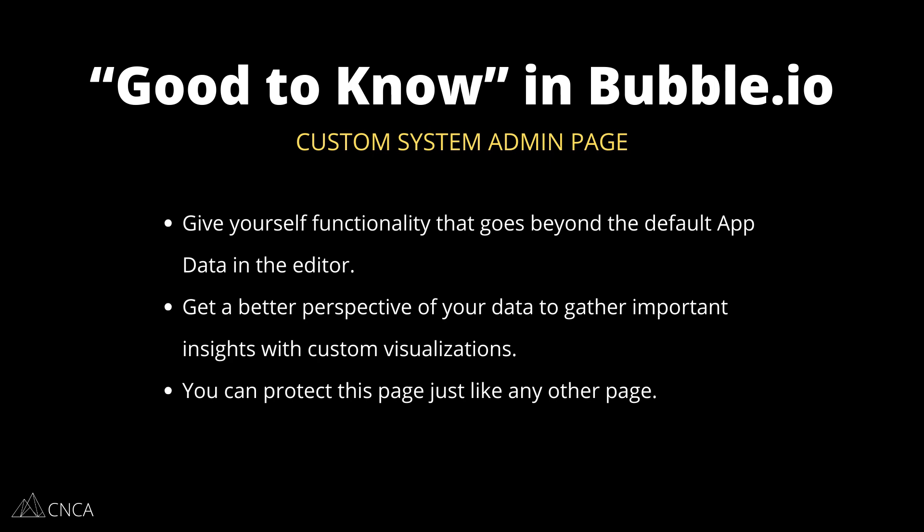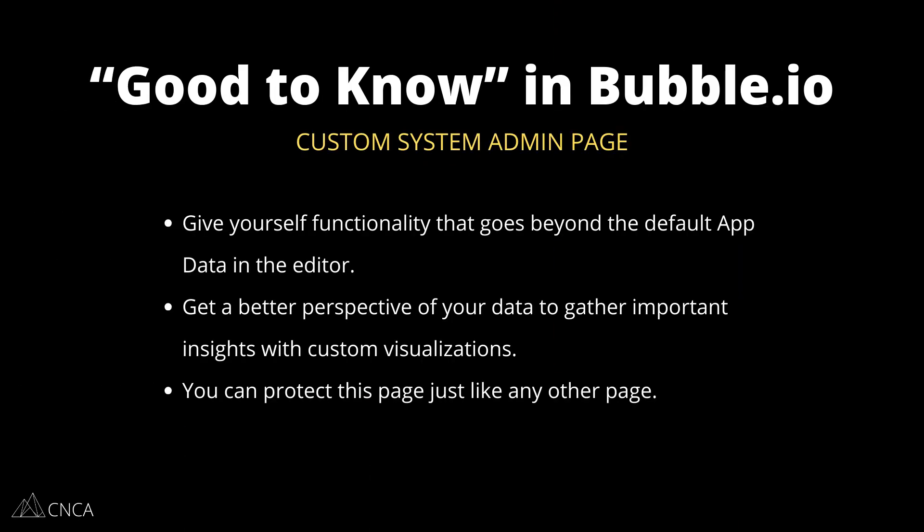This is a dedicated area where you design the interface to work for you, and of course you can protect this page so that only you can access it. Yes, you can go into your Bubble editor and do most of this functionality through app data and managing records, but there's going to be a point where those views are not giving you the perspective you need. You may need to visualize data differently with charts and graphs, search across multiple tables, or aggregate data to find calculated values. The system admin page lets you do all of that — just like any other page in your app.